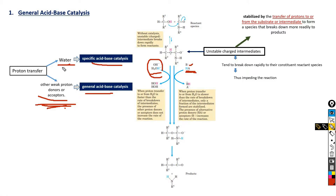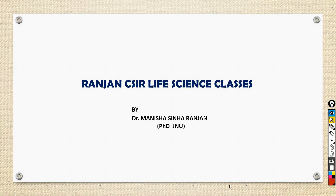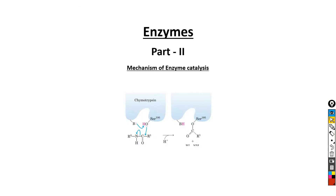When proton transfer involves water alone, it is referred to as specific acid-base catalysis. But when proton transfer involves other proton donors or acceptors, it is known as general acid-base catalysis. Hello everyone, welcome back to my channel. In this video, I am going to discuss about different mechanisms of enzyme catalysis.